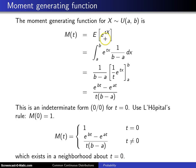When we take this expected value, we integrate over the support of the random variable, which is from a to b. And we take e to the tx and simply put it in front of the probability density function 1 over b minus a dx.